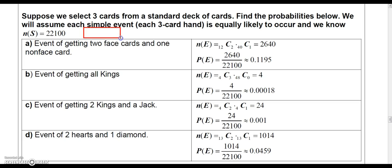Because the way you would do that, by the way, if you forgot how, you would just do 52 C3. And then that combination would give you 22,100.